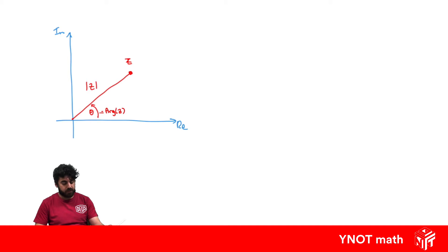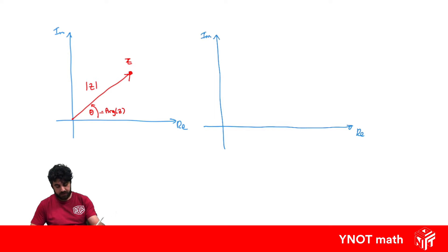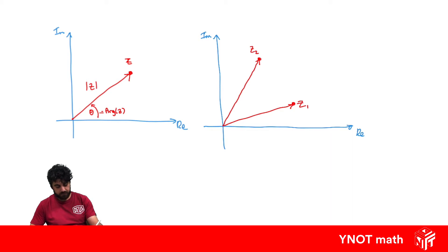This fully defines the complex number, and we can treat it as a vector going from the origin to that point. If we have our real and imaginary axes and some complex number z1 out here, and another one z2 out here, and we treat them as vectors, we can say that the addition of those vectors forms a parallelogram.